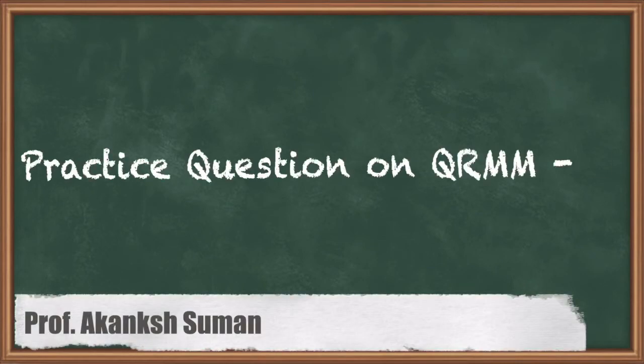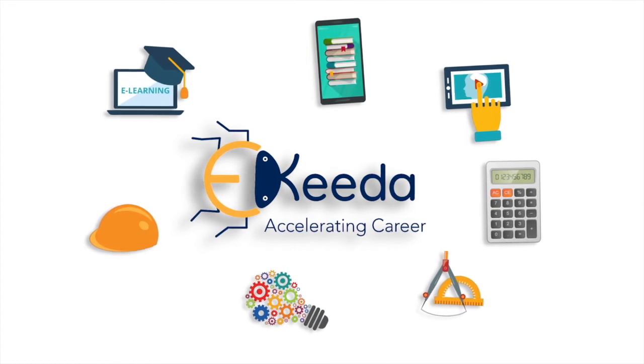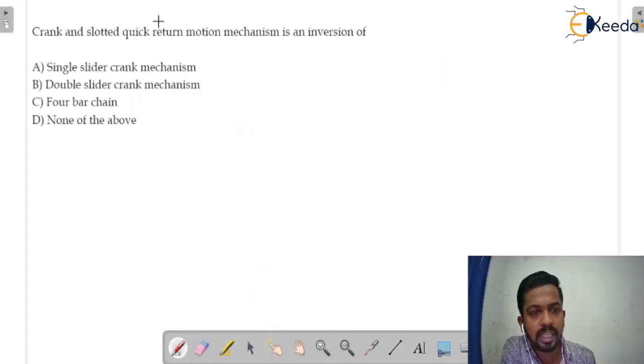Hello everybody, this is Akanksh Suman here. Now we are going to start discussion on the crank and slotted lever mechanisms. In the question, it is given that crank and slotted quick return motion mechanism is an inversion of what type of mechanism.